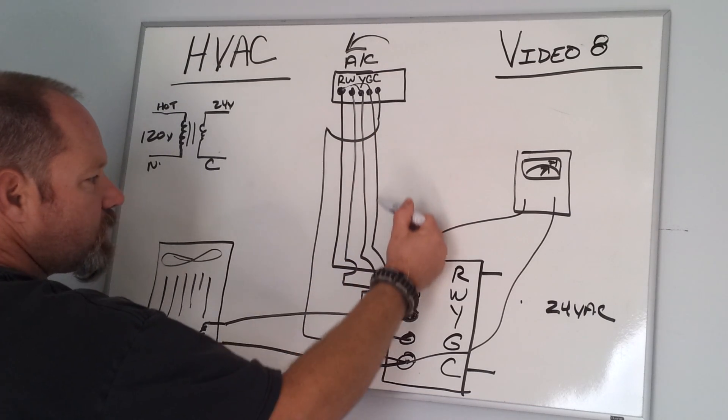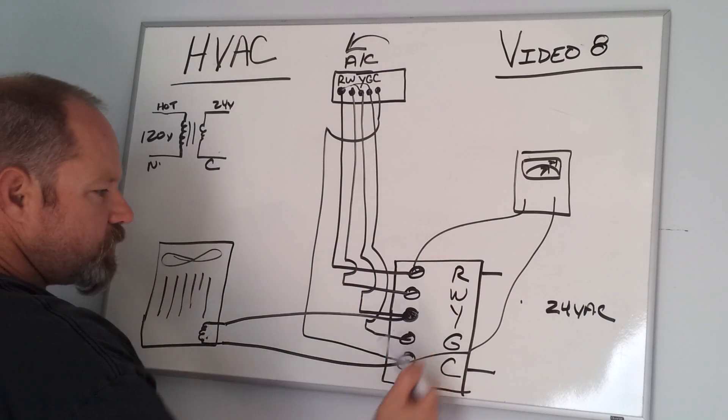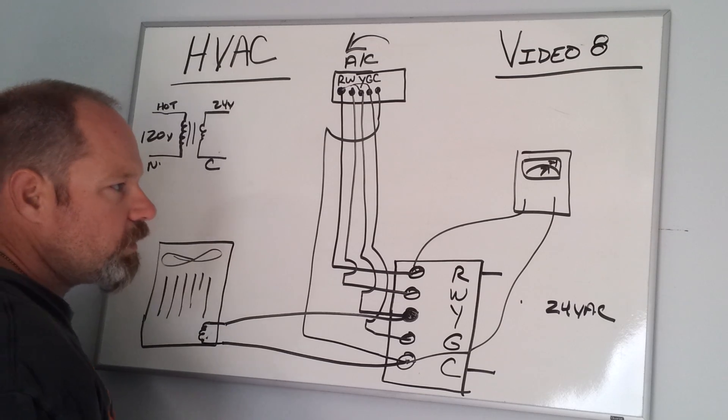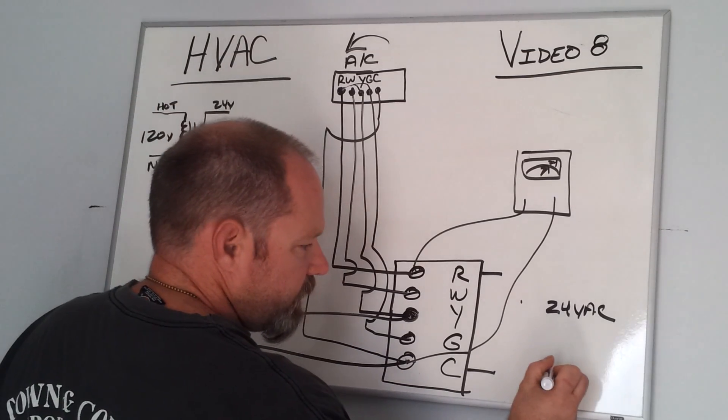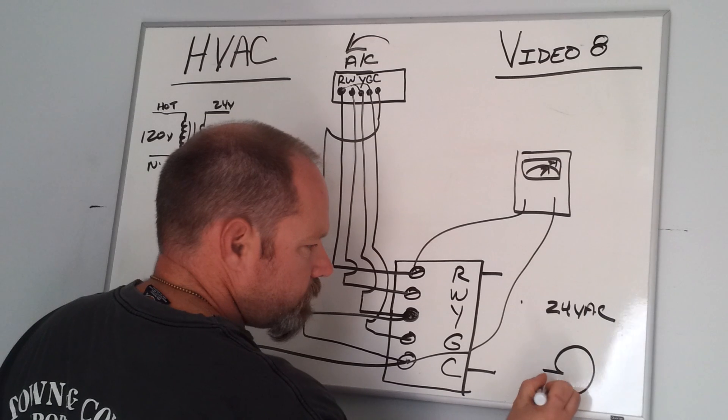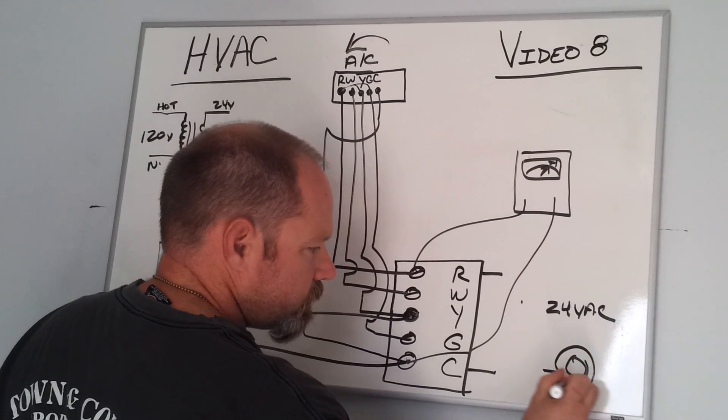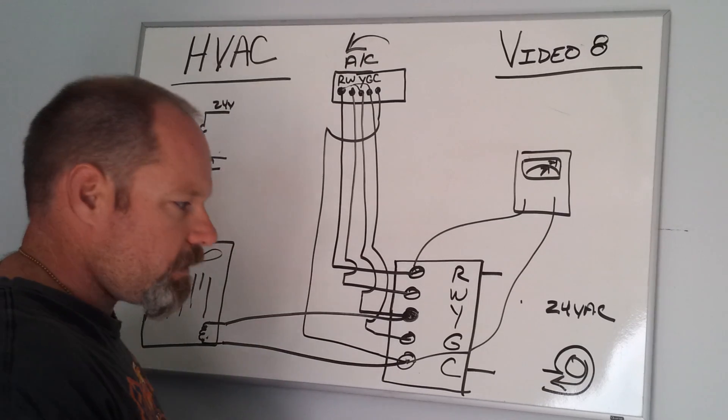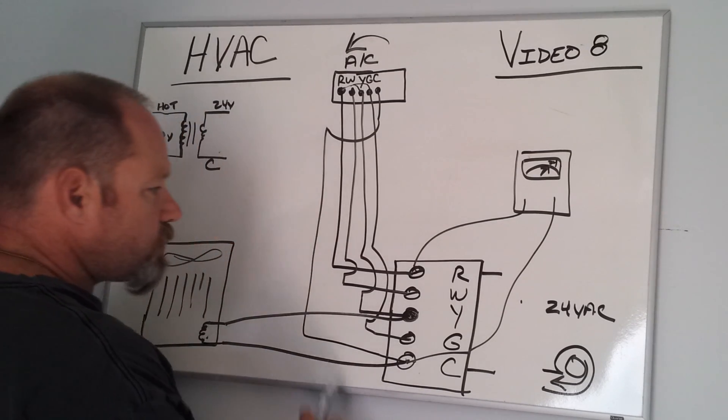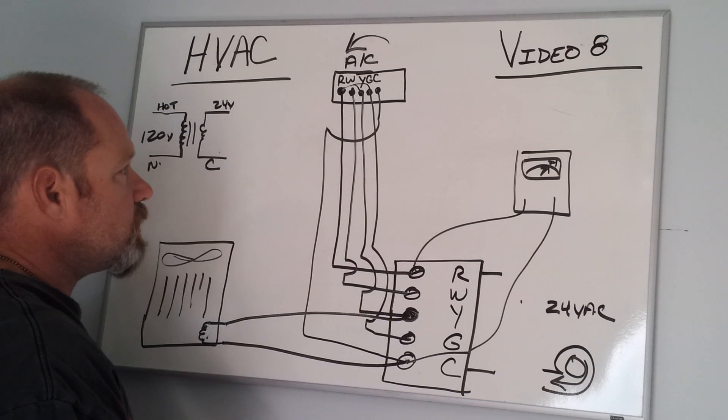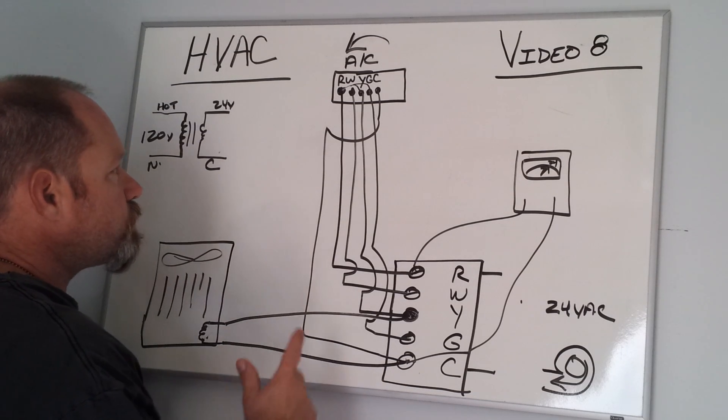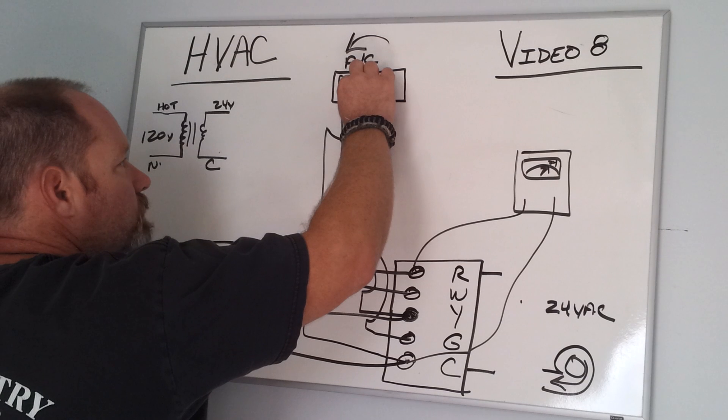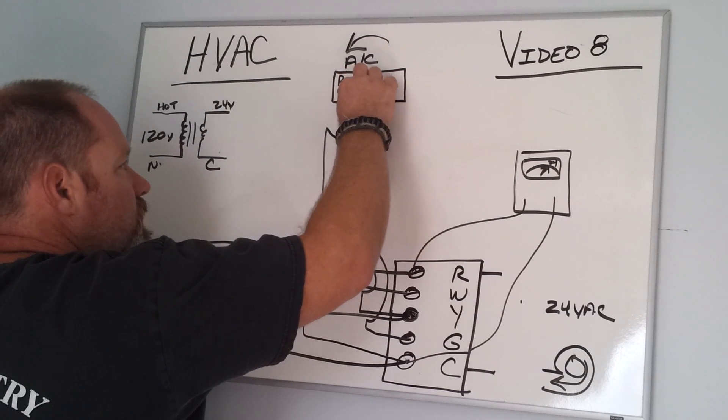The other thing that's happening is that we're sending a signal down the G terminal. G is nothing more than energizes the fan on your unit and allows the fan to come on and blow air. So pretty much that's it in a nutshell.